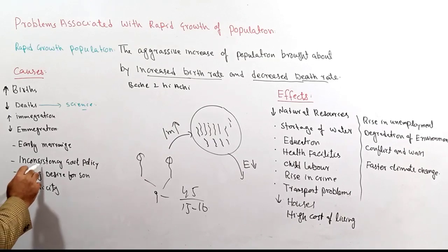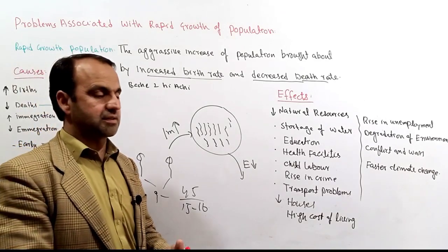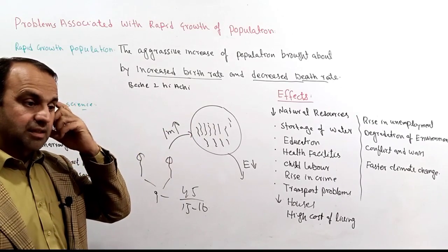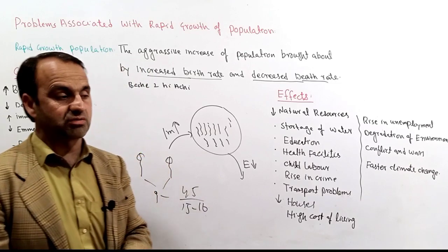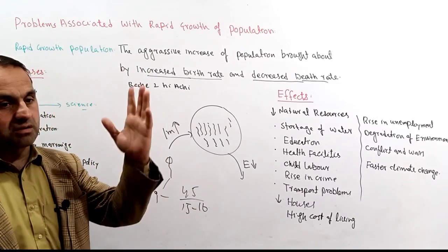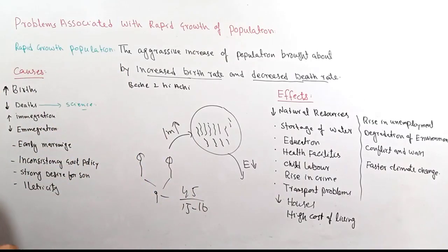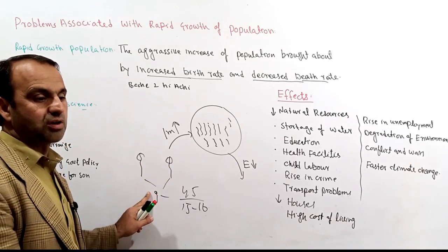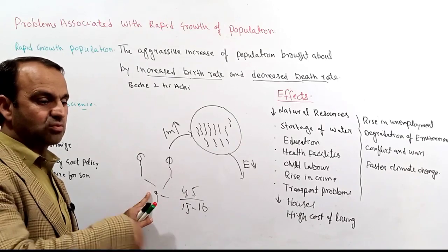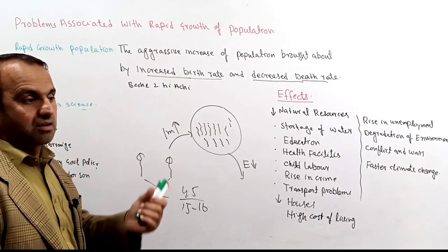Another reason for rapid population growth is the inconsistency of government policies, including family planning. In Pakistan, for example, policies may say to have only two children, but they are not effectively enforced. The government has not really focused on family planning, and people are not following the policy. This is another reason for rapid population growth.